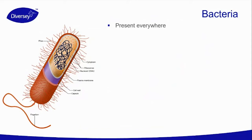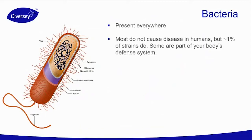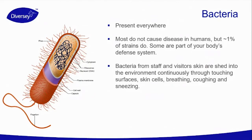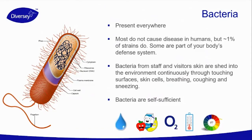Bacteria are present everywhere. Most do not cause disease in humans, but 1% of the strains do. Some are part of our body's defense system. They have general genetic material, a cell wall, membrane, cytoplasm, and sometimes a flagellum that helps them move in the environment. Bacteria are spread from staff to visitors continuously through touching surfaces, skin cells, breathing, coughing, and sneezing. Bacteria are self-sufficient — they only require water, nutrients, oxygen, the right temperature, and the right pH.